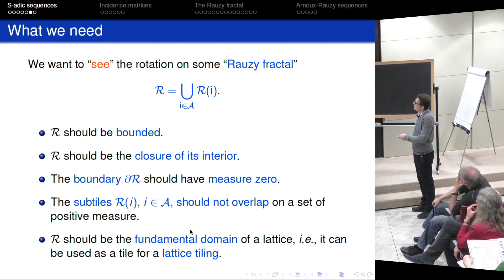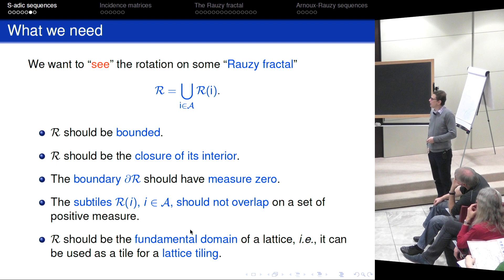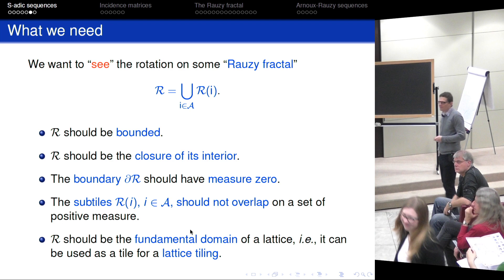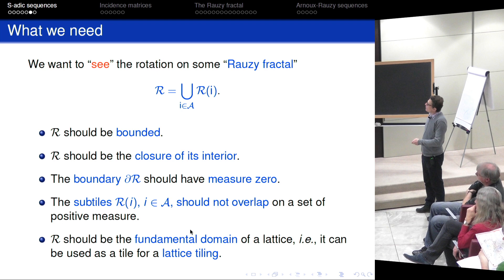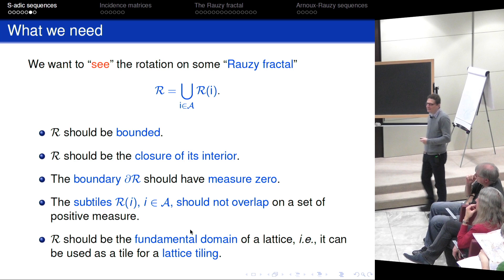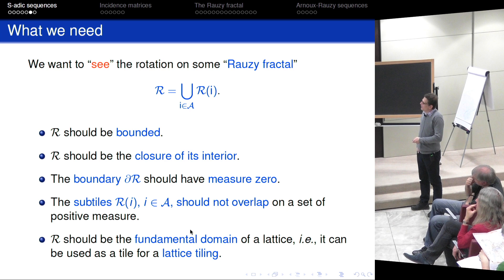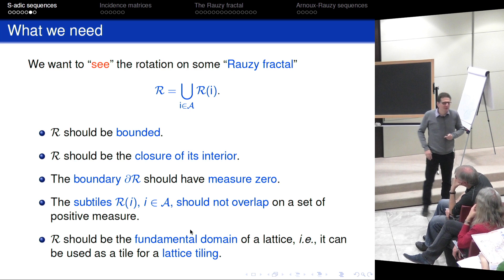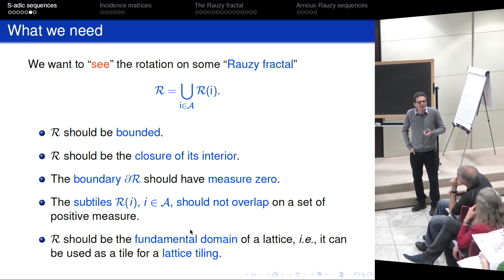It turns out we are able to prove all these conditions under fairly general assumptions. When you say rotation, it is a rotation on the torus: X plus alpha modulo the lattice. These properties can be defined in a fairly general setting to ensure R is a fundamental domain; we need some additional combinatorial conditions that have to be checked. We are working on getting rid of this. So far, the only general thing is that if we project R onto the torus, it is M-to-1 for some M ≥ 1. The difficulty is to prove M equals 1.